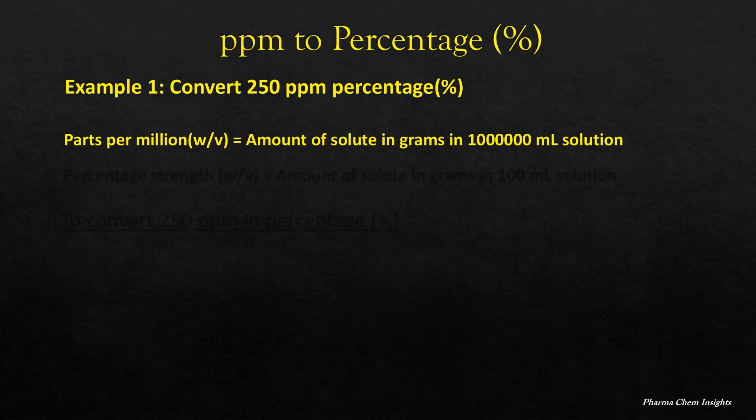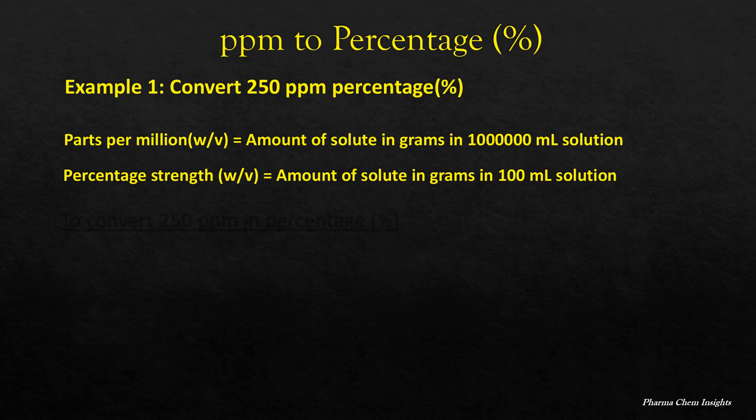First we will see what is parts per million. Parts per million weight by volume is equal to amount of solute in grams present in 1,000,000 ml of solution. Percentage strength weight by volume is equal to amount of solute in grams present in 100 ml solution.